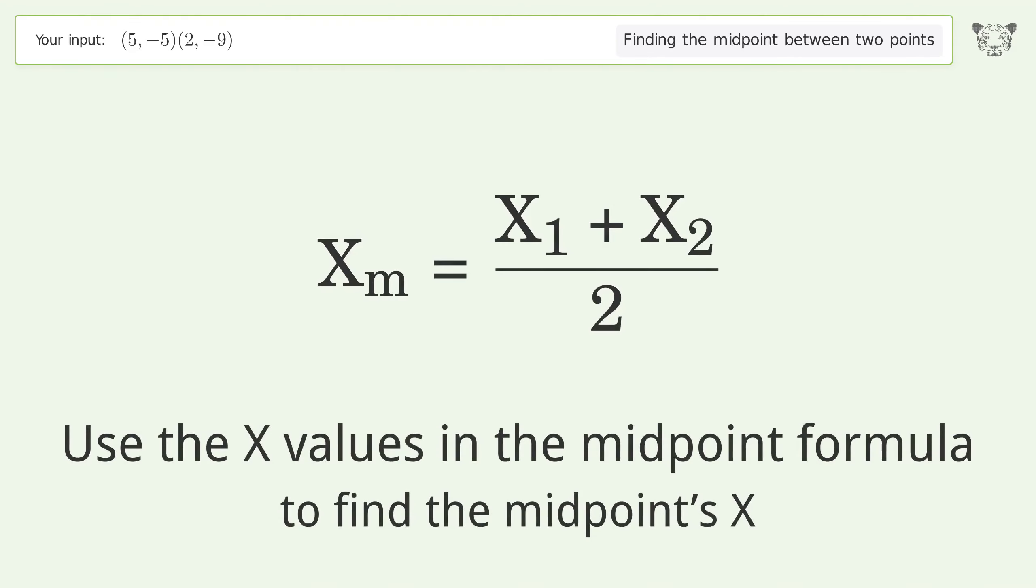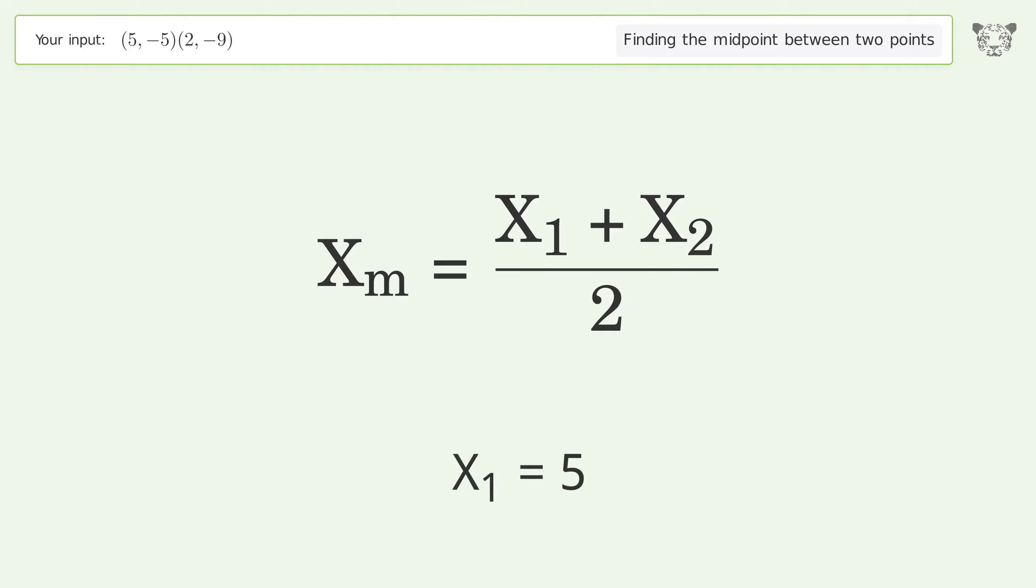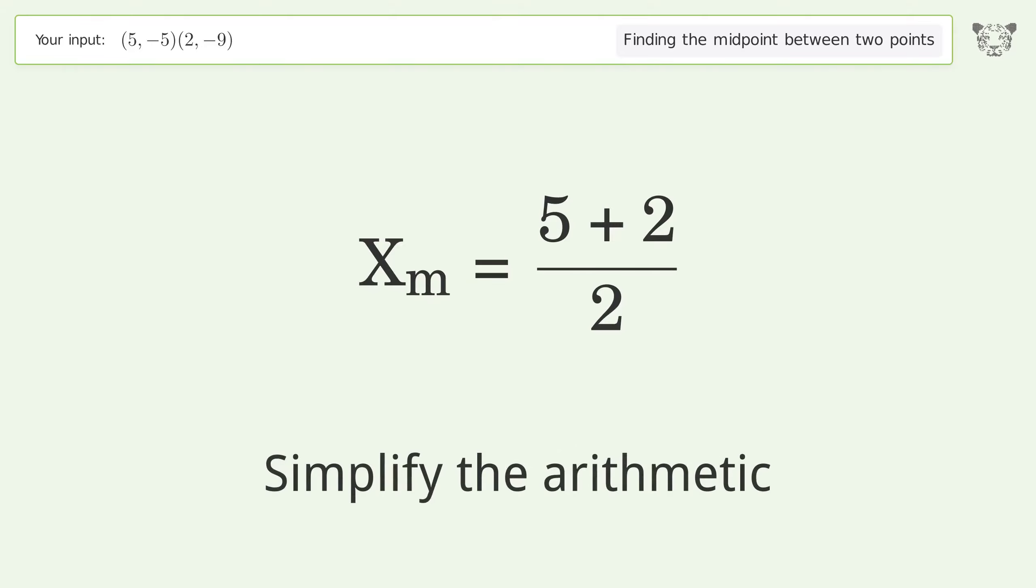Use the x values in the midpoint formula to find the midpoint's x-coordinate. x1 equals 5, x2 equals 2. Simplify the arithmetic.